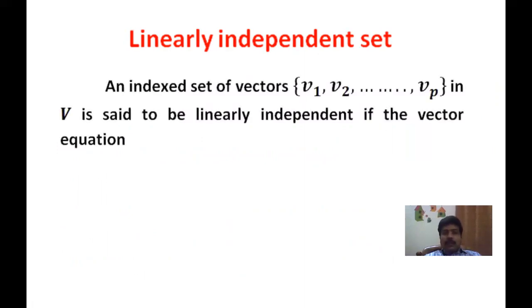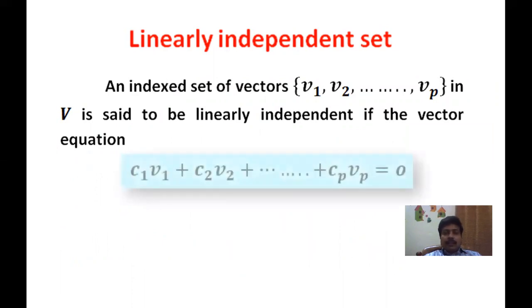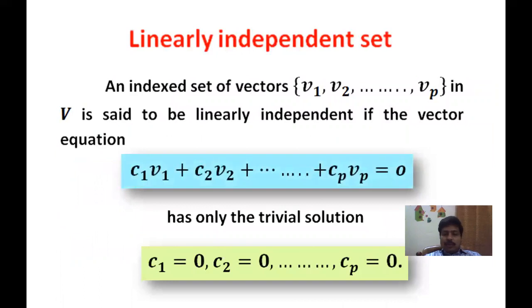An indexed set of vectors {V1, V2, ..., Vp} in a vector space V is said to be linearly independent if the vector equation C1·V1 + C2·V2 + ... + Cp·Vp = 0 has only the trivial solution C1 = 0, C2 = 0, ..., Cp = 0. So whenever this vector equation has no solution other than the zero solution — that is, if we take all the scalars as zeros — the vectors V1, V2, ..., Vp are said to be linearly independent.